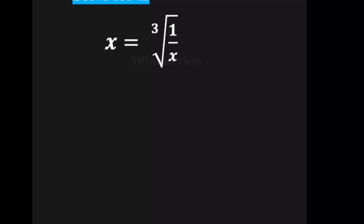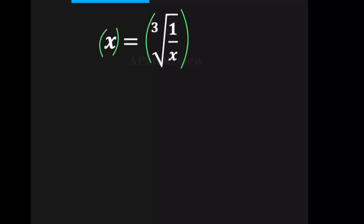Let's solve this equation for x. The first step, we're going to put power 3 on both sides, and this and this will cancel out. We have x to the power of 3 on the left side, and on the right hand side we have 1 over x. And the second step,